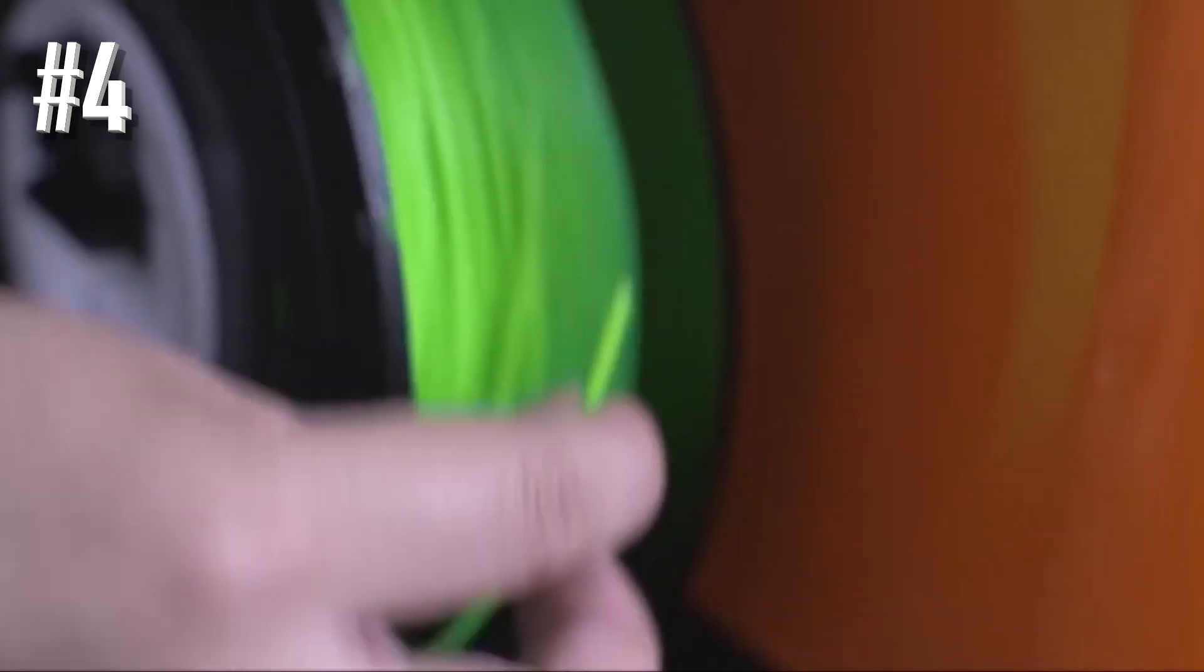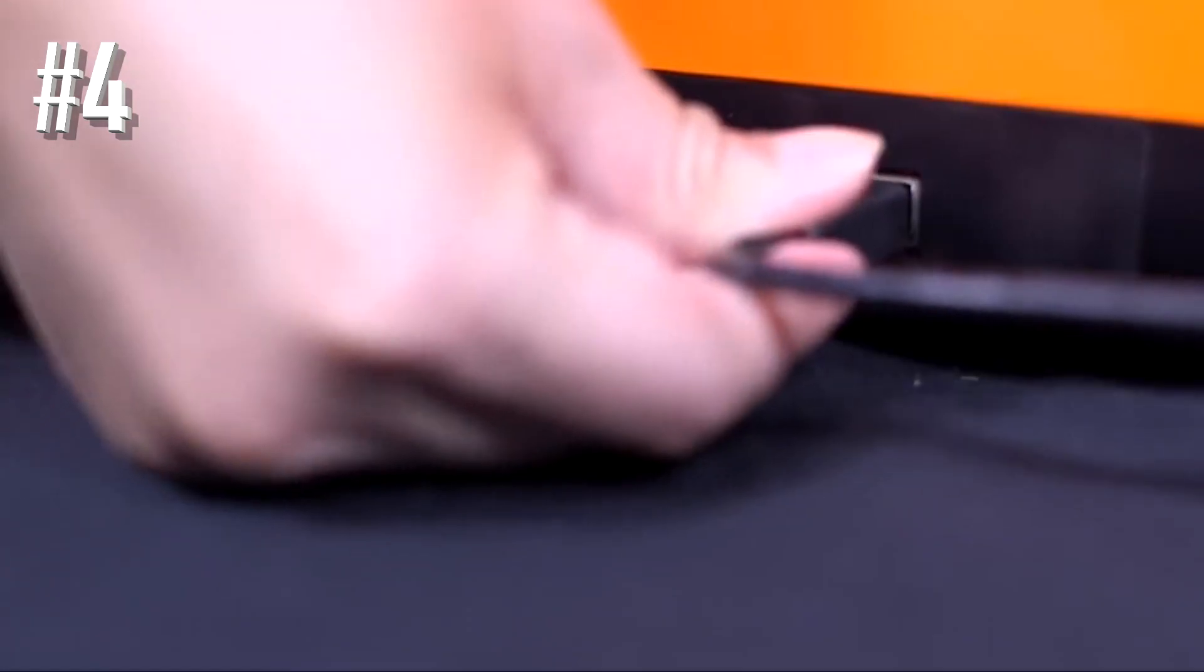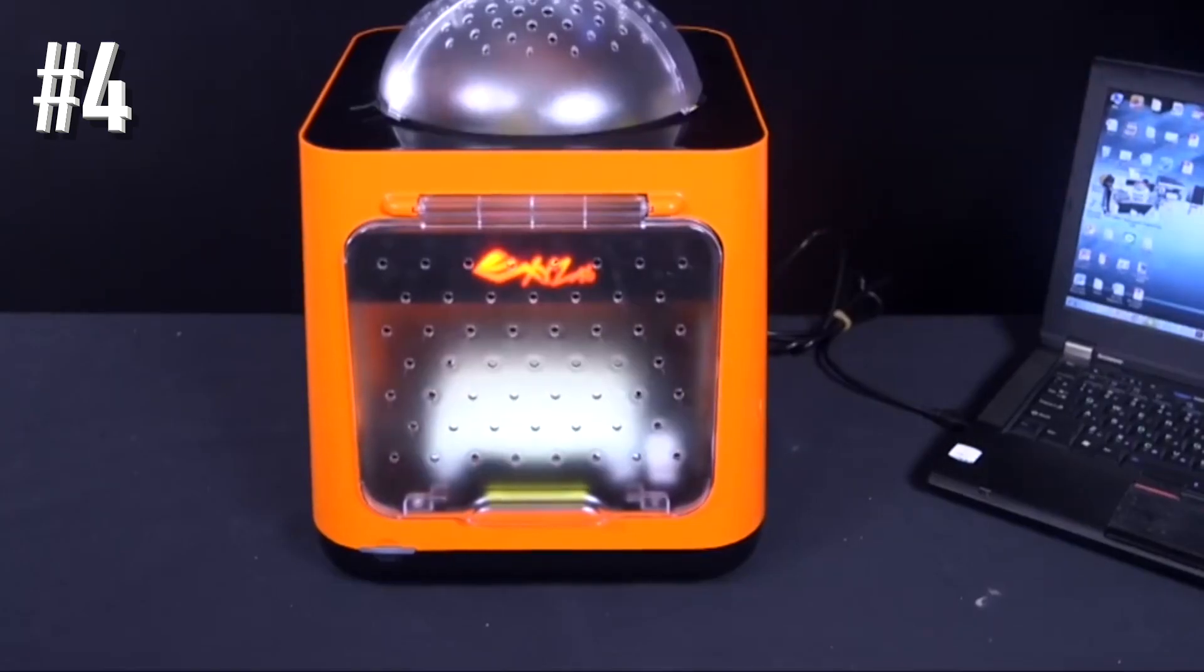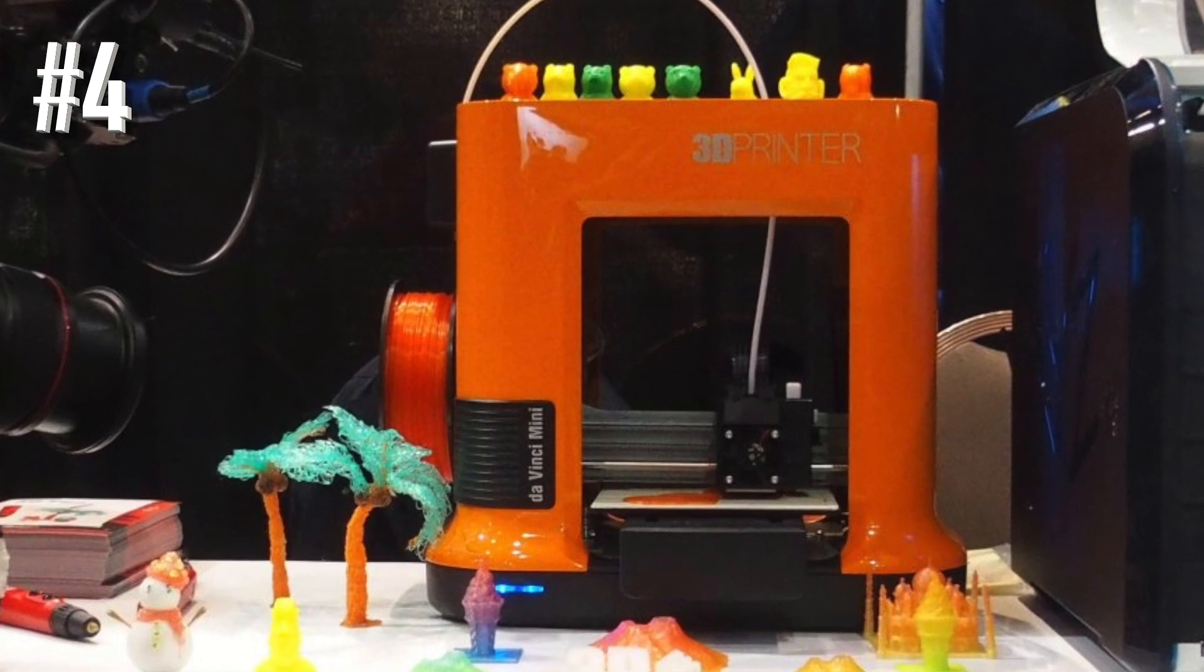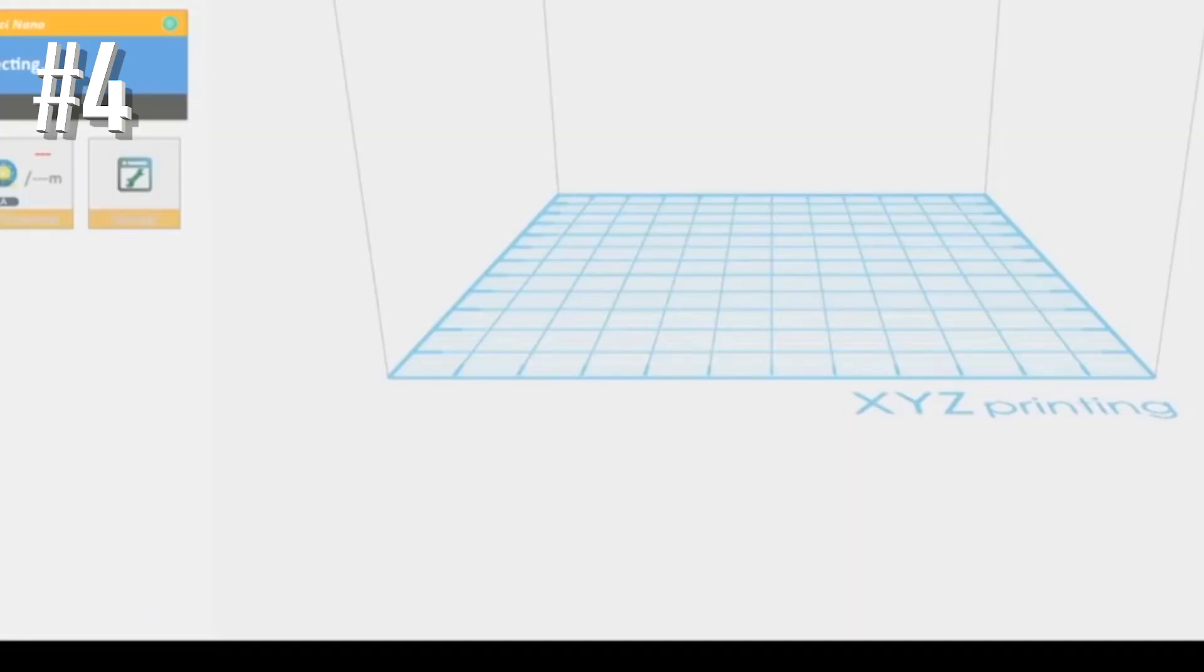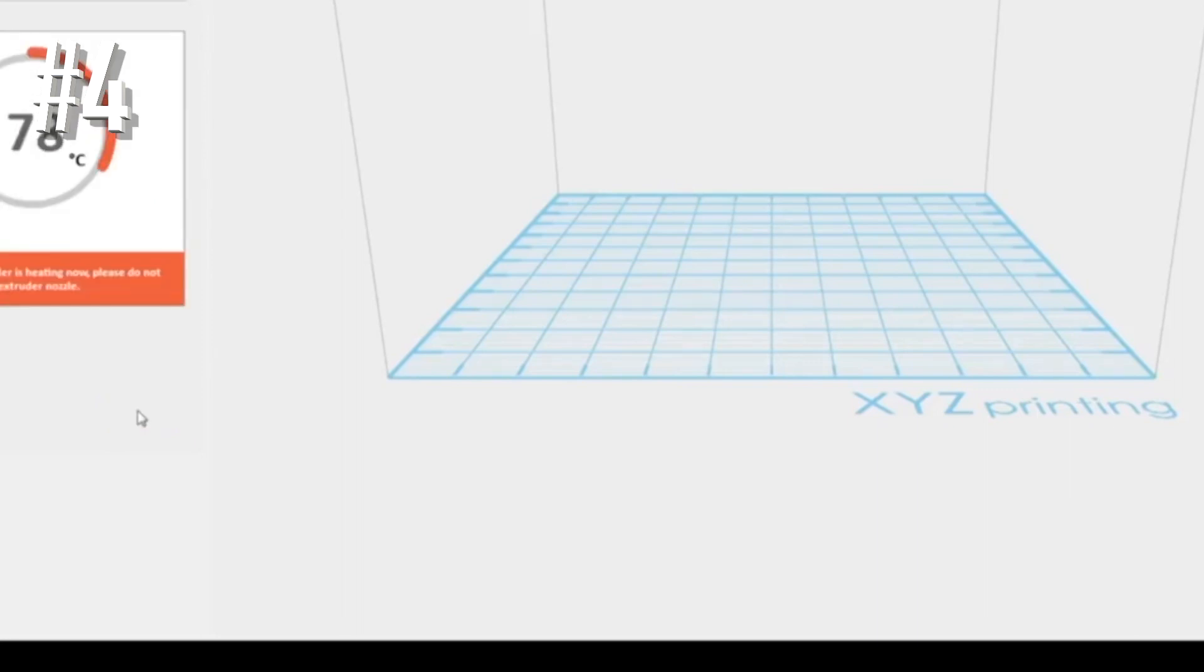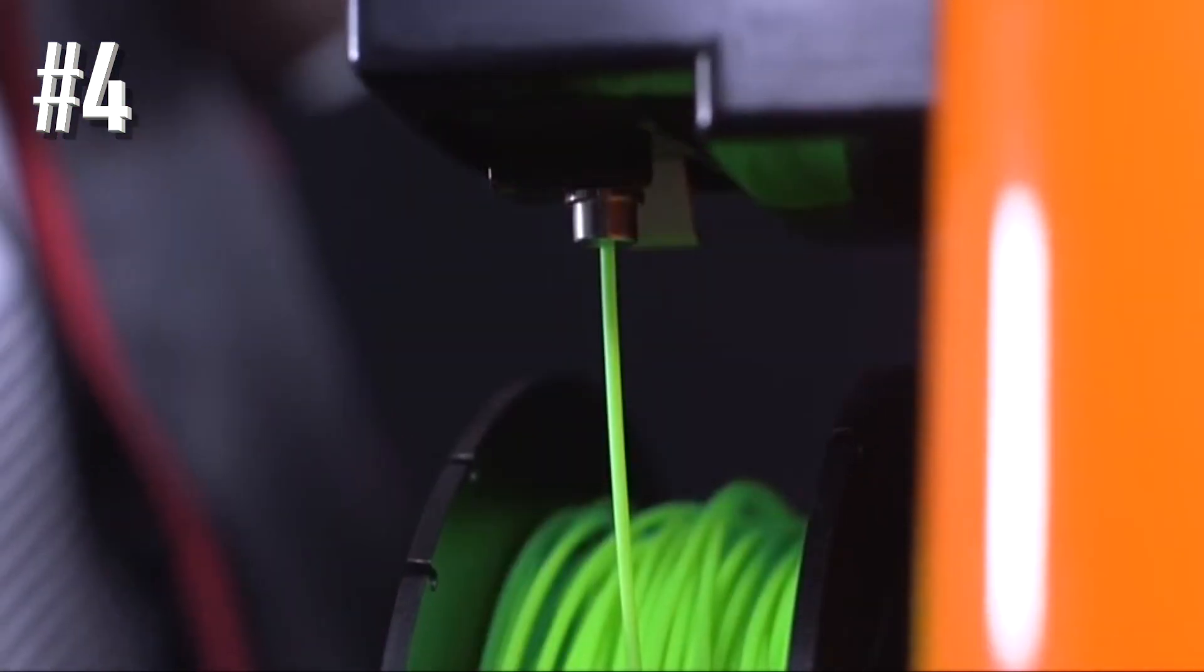For parents who want a 3D printer for their kids, this is highly recommended. Nano has a non-heated print bed and enclosed print area to keep children from touching the hot extruder or any moving parts. However, parents should still supervise their children because if you open the front door, the printer keeps working. For beginners who want to experiment with their friends, this machine is small and portable. You can take it with you and start 3D printing wherever you are.